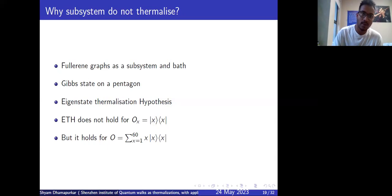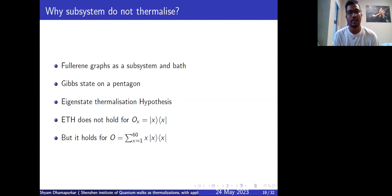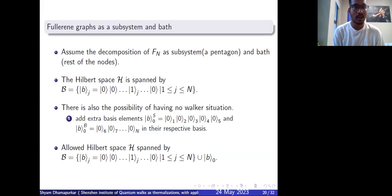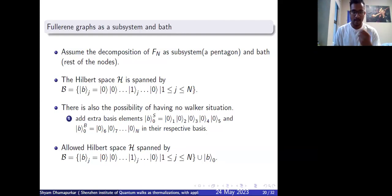Now we address the question of why subsystems do not thermalize. We look at how to write the isolated quantum system — subsystem and bath decomposition in the graph system — then the Gibbs state on the pentagon, and then the eigenstate thermalization hypothesis. For the fullerene graph F_n, we denote the subsystem as one pentagon and the bath as the rest of the nodes. The Hilbert space is spanned by basis vectors b_j, where at position j there is a one and the rest are zero — giving N basis vectors.